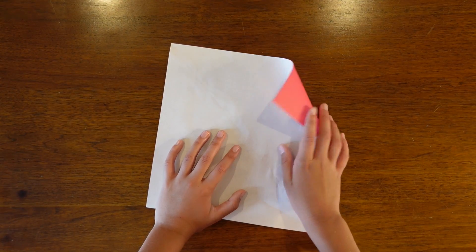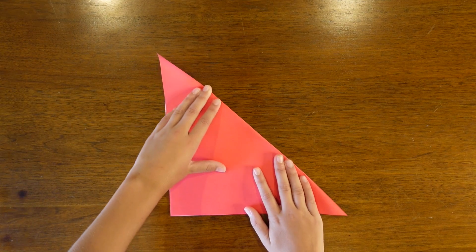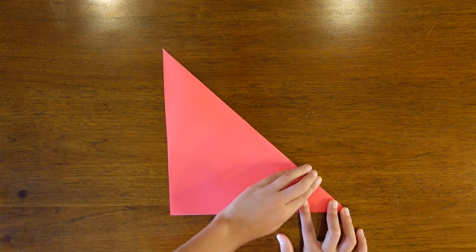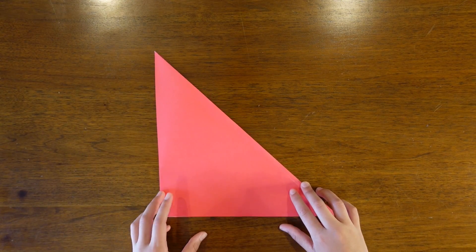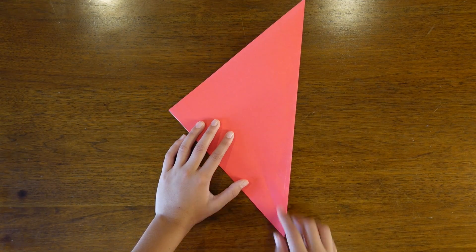We're going to start white side up and then fold in half diagonally. And then we're going to fold the edge to the opposite edge.